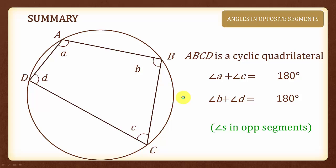In summary, if ABCD is a cyclic quadrilateral, then angle A plus angle C will be 180 degrees and angle B plus angle D is 180 degrees as well because of the angle property angles in opposite segments. And that's all for this topic.